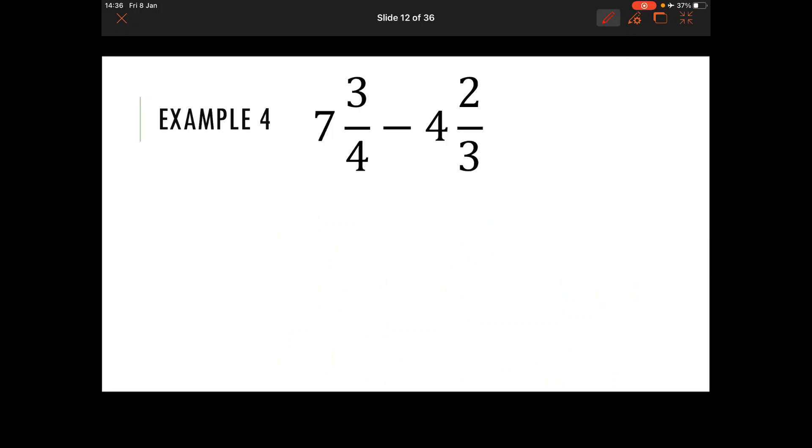For example number four then we're going to do our seven take away four to give us three. I've then got three quarters take away my two thirds. I'm going to multiply my two bottom numbers together so I've got three at the start, the 12 and the 12.